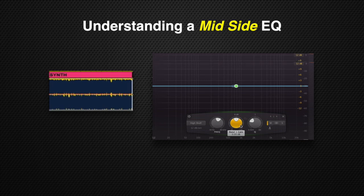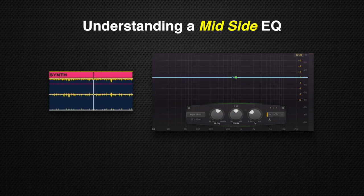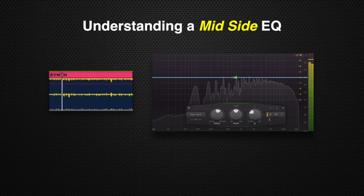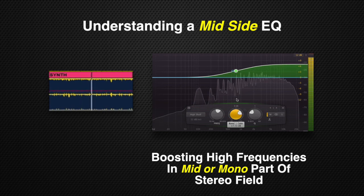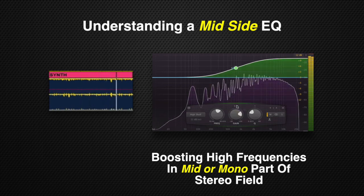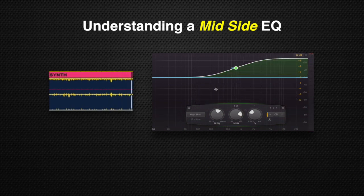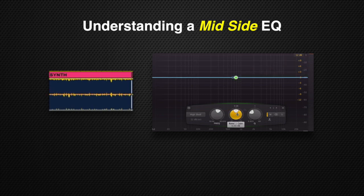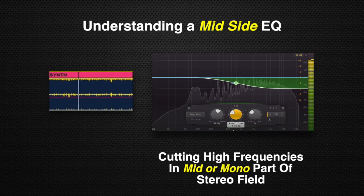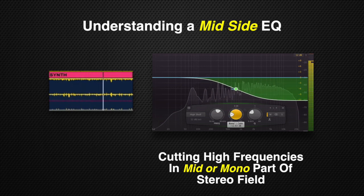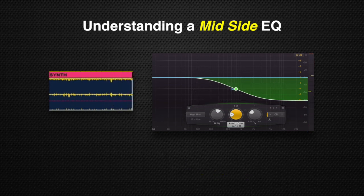So I have my mid-side EQ here. First, we are going to boost the high frequencies of the mid or mono signal of this synth. Now let's boost the high frequencies. Right now, only the high frequencies in the mono signal are being boosted and the high end of the sides of the stereo field are untouched. Now let's cut out the high frequencies in the mid or mono part of the stereo field. As you can hear, the sides of the stereo image still sound bright and crisp, while the center sounds dull.